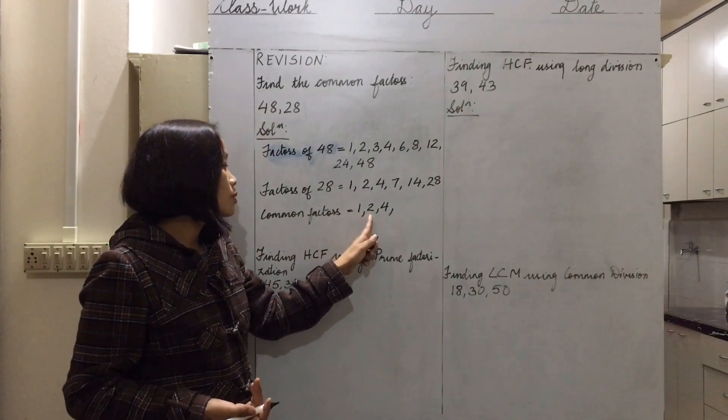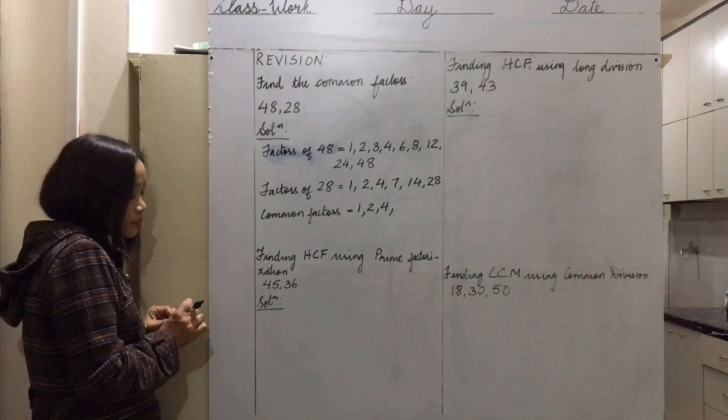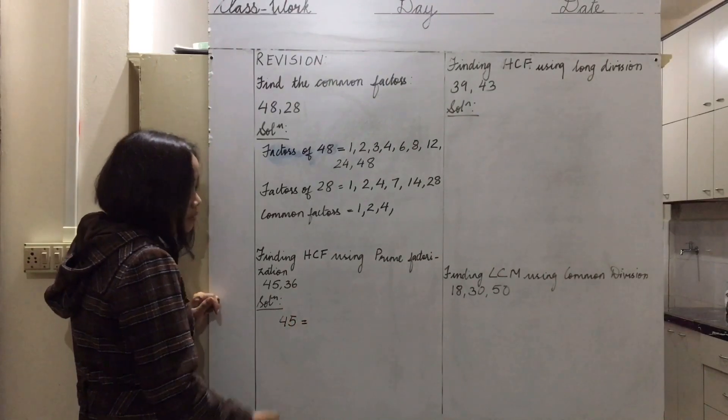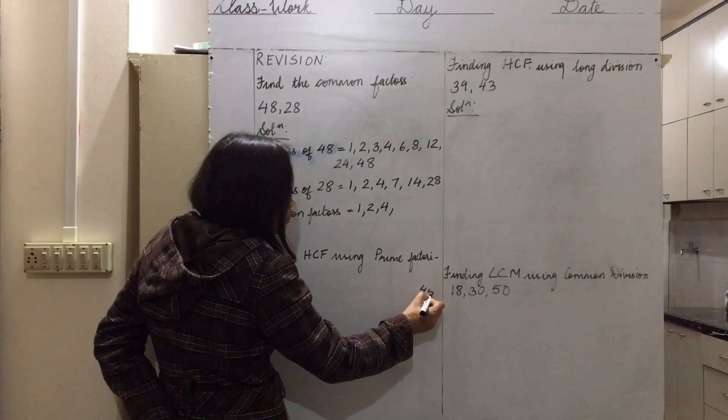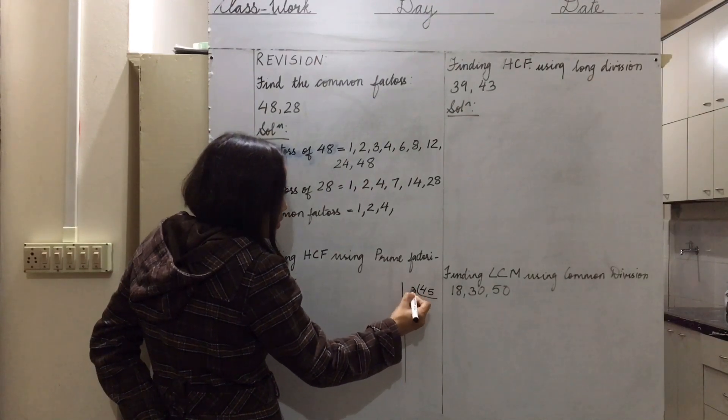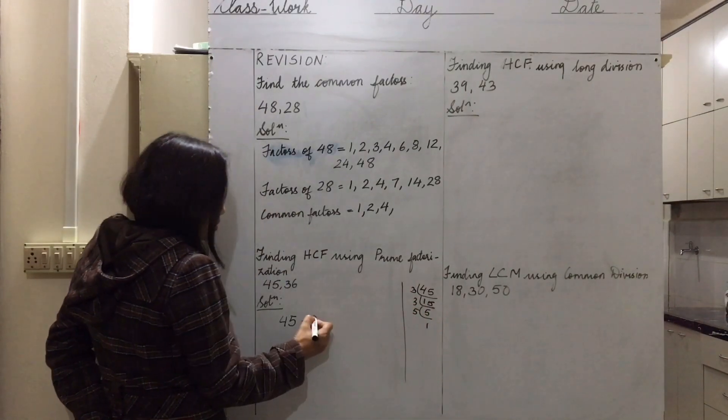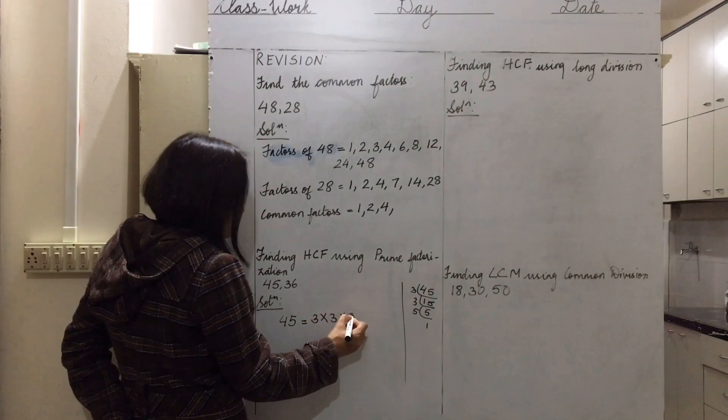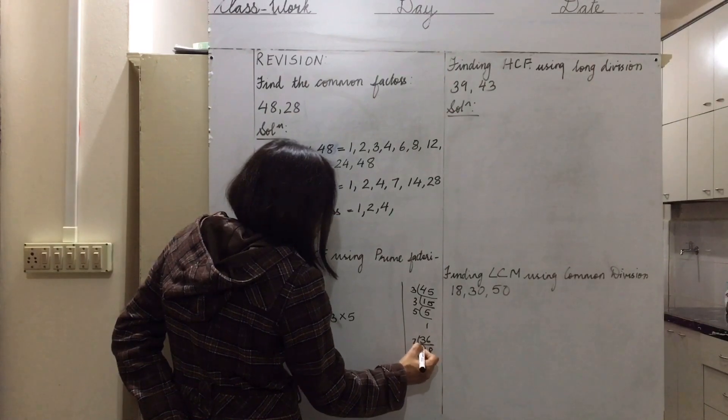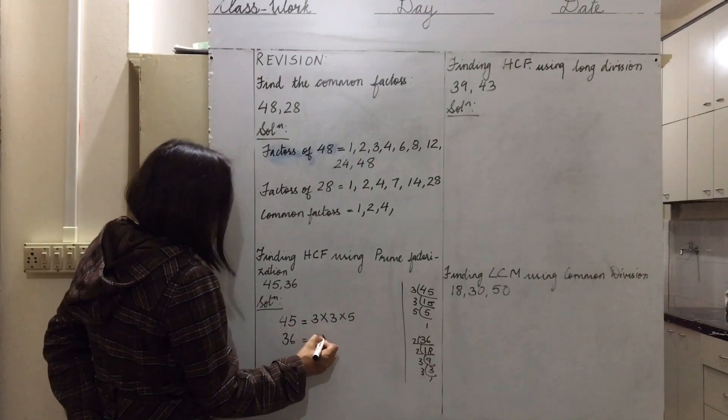Next we have finding the HCF using prime factorization method. For finding the HCF, we prime factorize 45. What can divide? Three times 15, three times five, five times one. Then we list out the factors: 3 times 3 times 5. Then we have 36.